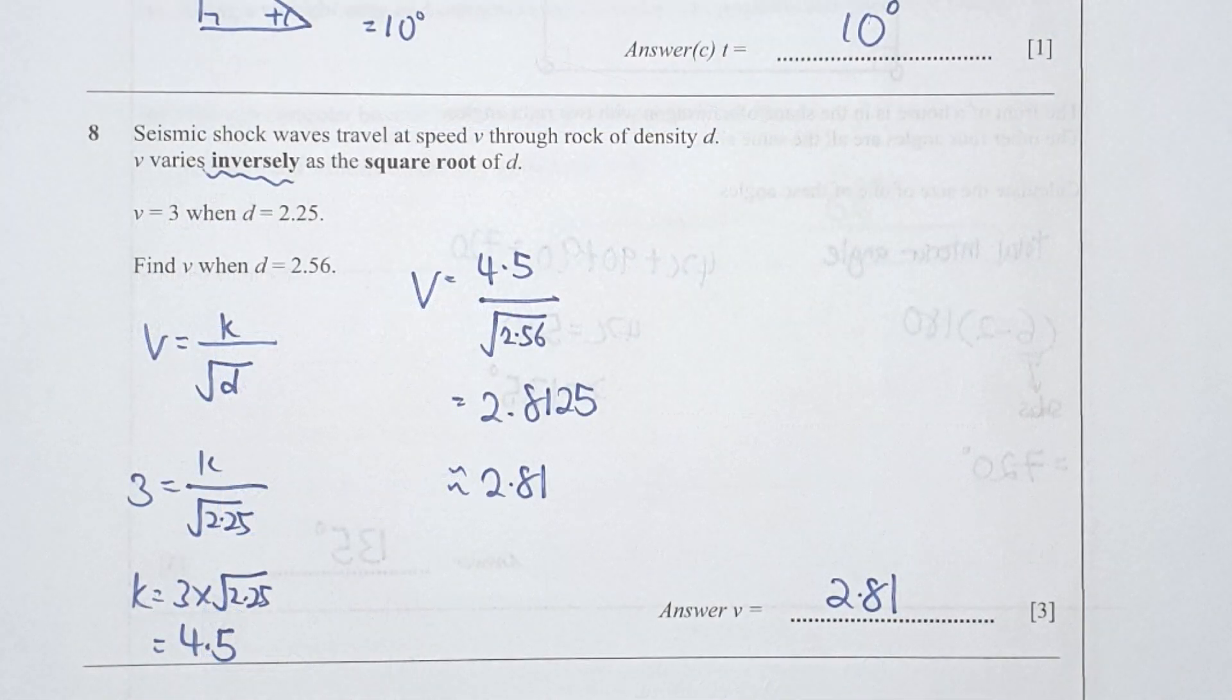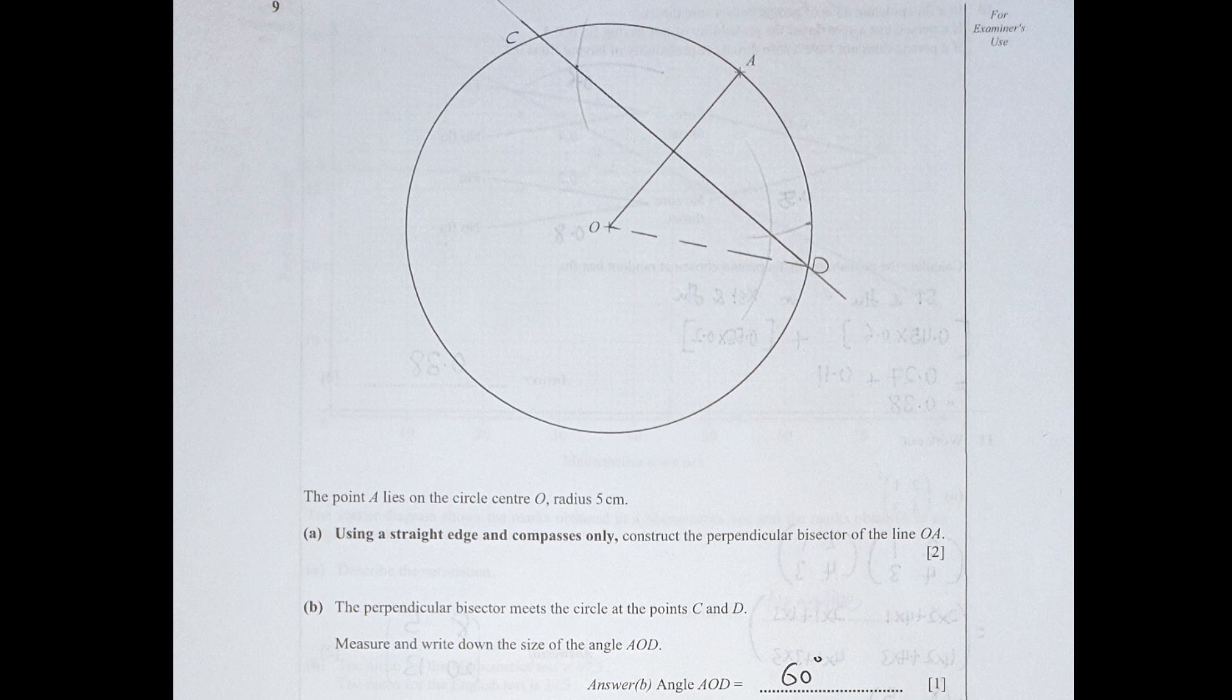Question 8: the keyword here is inversely. Okay, so we will be using y equals to k over x. Your y here is being represented by v, and your x here is actually square root of d. So 3 equals to k over square root of 2.25. You get your k's value as 4.5. For v here equals to 4.5 divided by square root of 2.56, you will get your final results as 2.81.